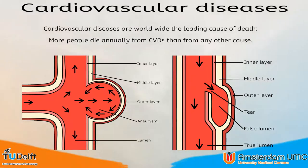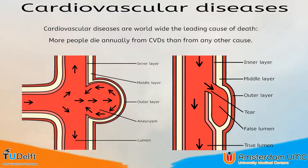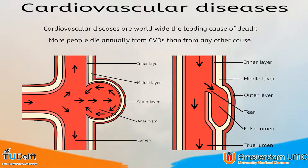Cardiovascular diseases, or CVDs, are the worldwide leading cause of death. Therefore, having a good understanding of the anatomy and the blood flow is crucial, as the anatomy is affected by the blood flow and the blood flow affects the anatomy. Examples of this are shown on the slide: on the left you can see an aneurysm and on the right a dissection. Both of these diseases are often fatal as a rupture in the vessel wall can occur. Therefore, early diagnosis or even prevention is important.